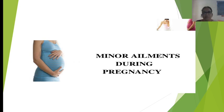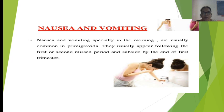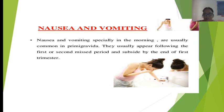The first minor ailment is nausea and vomiting. Women may face nausea and vomiting especially in the morning, and it is usually very common in primigravida. It usually appears following the first or second missed period and subsides by the end of the first trimester. In some women it may persist even after the second trimester, and excessive nausea and vomiting is called hyperemesis gravidarum, which may require administration of intravenous fluids to correct fluid and electrolyte imbalances.